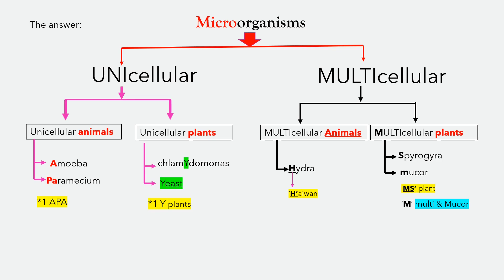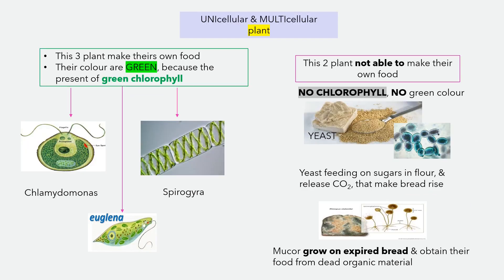Now you see how hard it is to remember when everything is combined together. Now we're going to look at the characteristics of unicellular and multicellular plants.